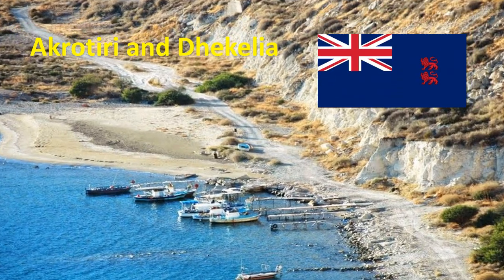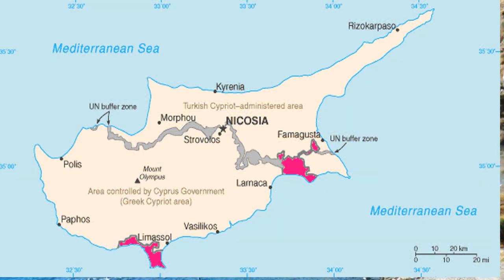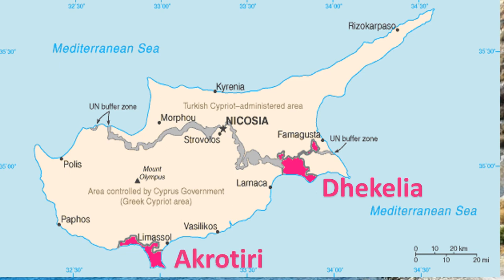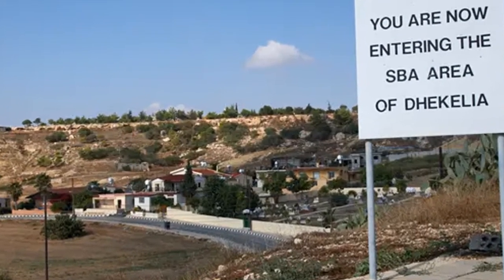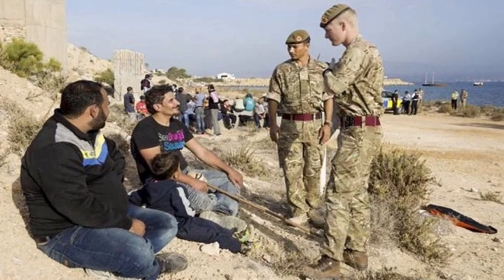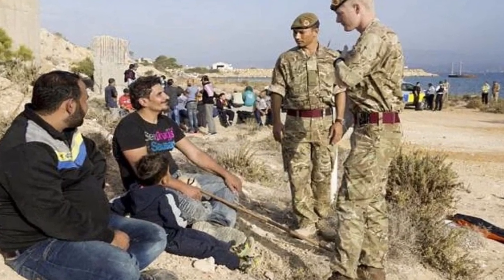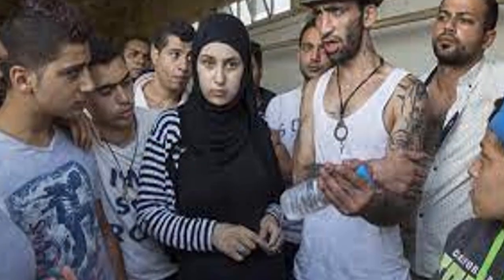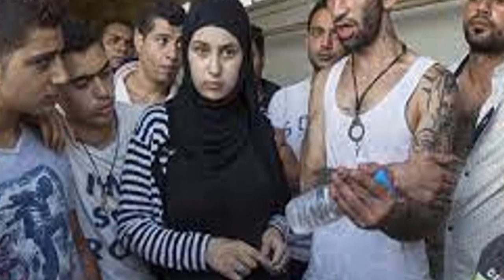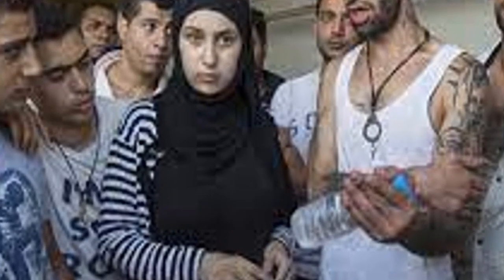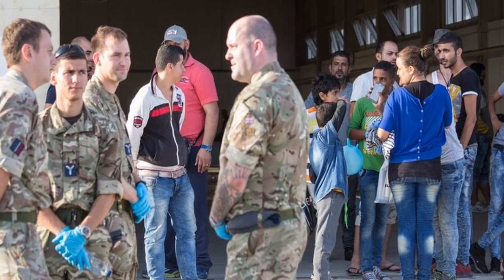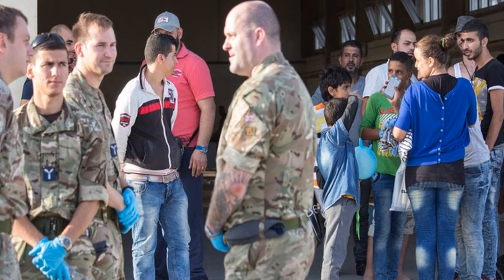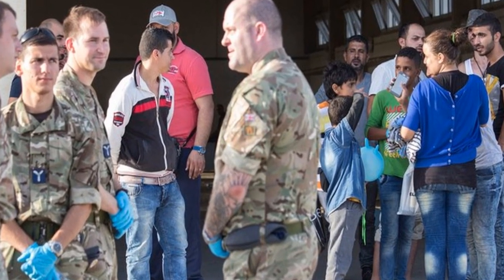Akrotiri and Dhekelia are two separate areas on the island of Cyprus. These areas include British military bases and came under British control in 1960. Approximately 18,000 people live in this area — about 11,000 of them are native Cypriots and the rest are British military and their families.